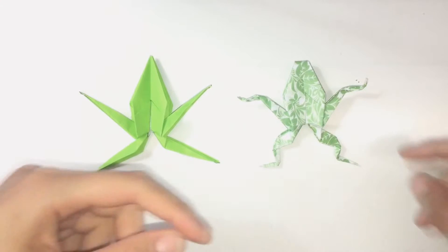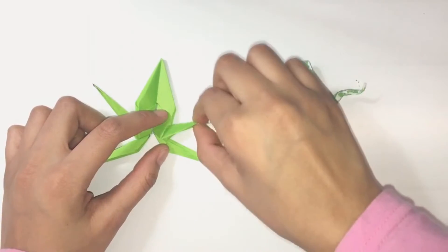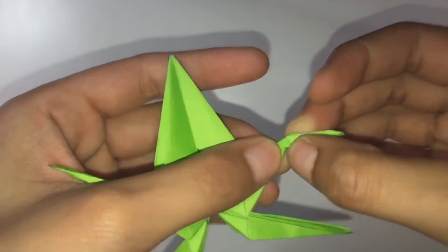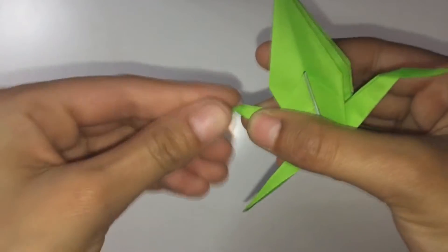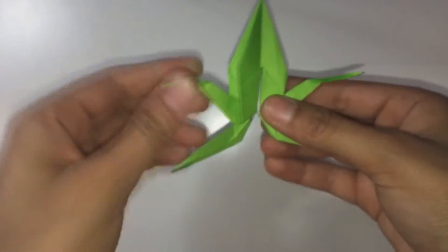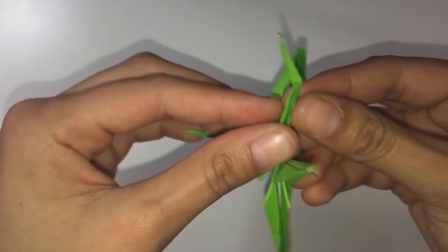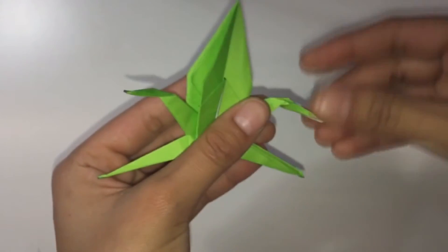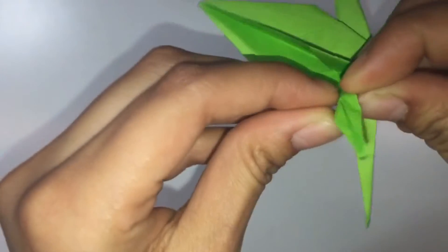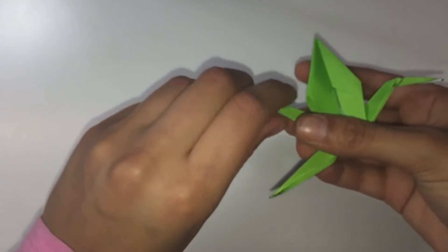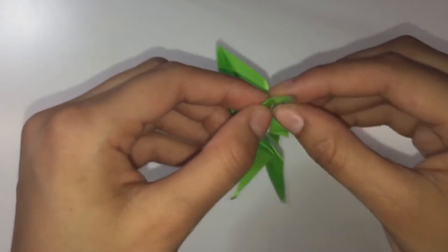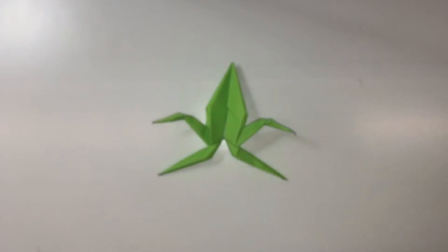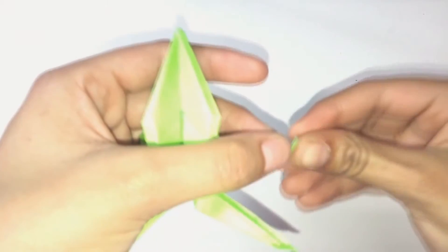Right now our frog looks sort of like a stick figure compared to the one on the right. What we are going to do is create the knees and the arms. So we are just going to bend them. From the front legs, I am going to fold them over and then inside reverse fold. For the hands, I just bend them over like this and then squash them.